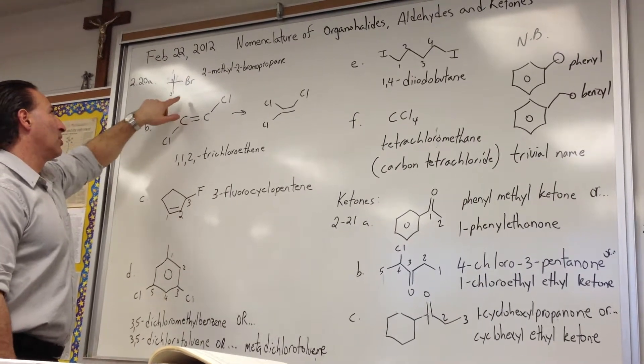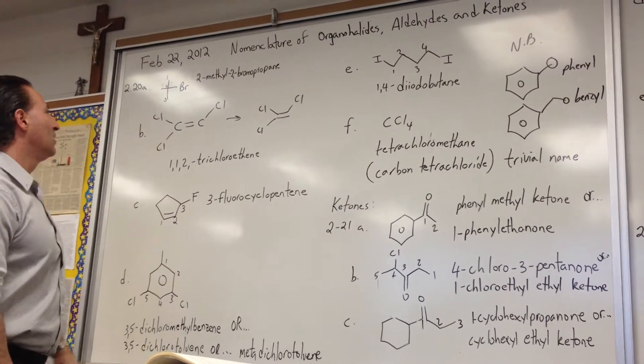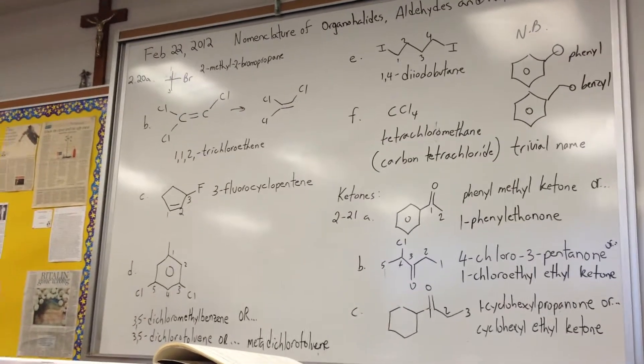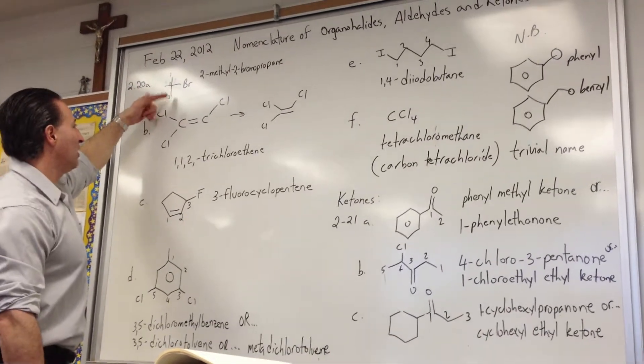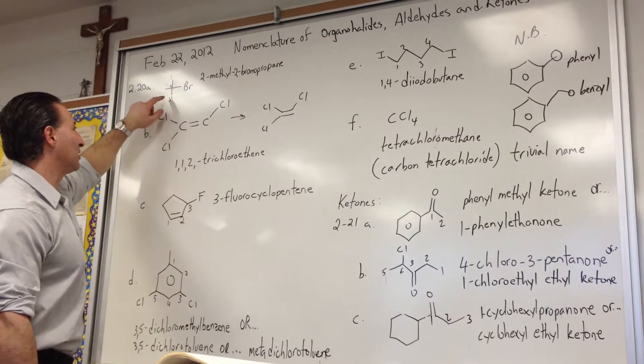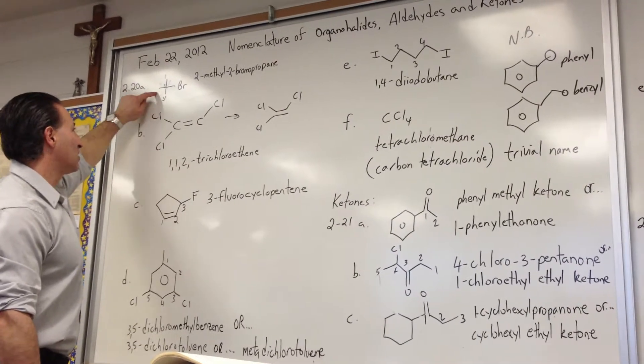So the proper name for this molecule, 220A on our handout, is 2-methyl-2-bromopropane. The longest continuous chain is a propane, substituted with a bromine at the second position, as well as a methyl group.